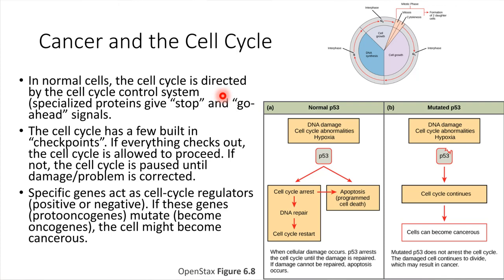These genes — the normal functioning genes, if they're working the way they're supposed to — are called proto-oncogenes. But if they mutate, if they experience some sort of damage and do not function correctly anymore, then we say that they become oncogenes. They used to be proto-oncogenes; now they're oncogenes.